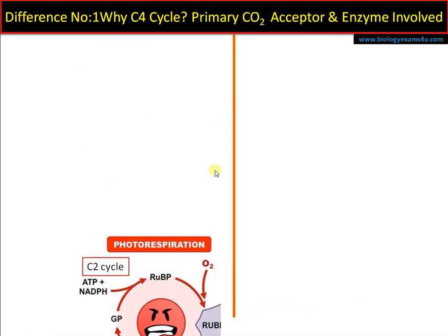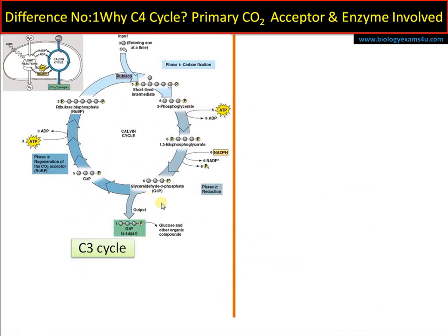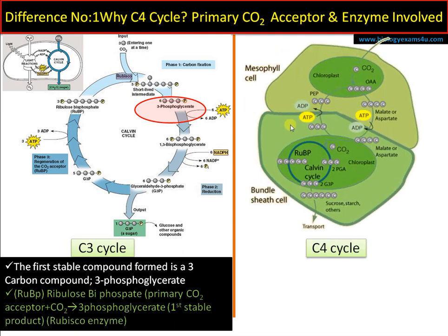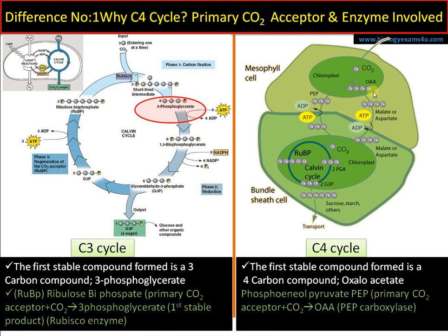Plants living in dry conditions always try to avoid photorespiration — that is why there is a C4 cycle. In the C3 cycle, RuBP combines with carbon dioxide in the presence of RuBisCO, forming a six-carbon short-lived intermediate; the first stable compound is 3-phosphoglycerate, so the cycle is called C3. In C4 cycle, carbon dioxide combines with phosphoenolpyruvate (PEP), forming oxaloacetic acid — a C4 compound. The primary CO2 acceptor in mesophyll cells is PEP, and the enzyme involved is PEP carboxylase.